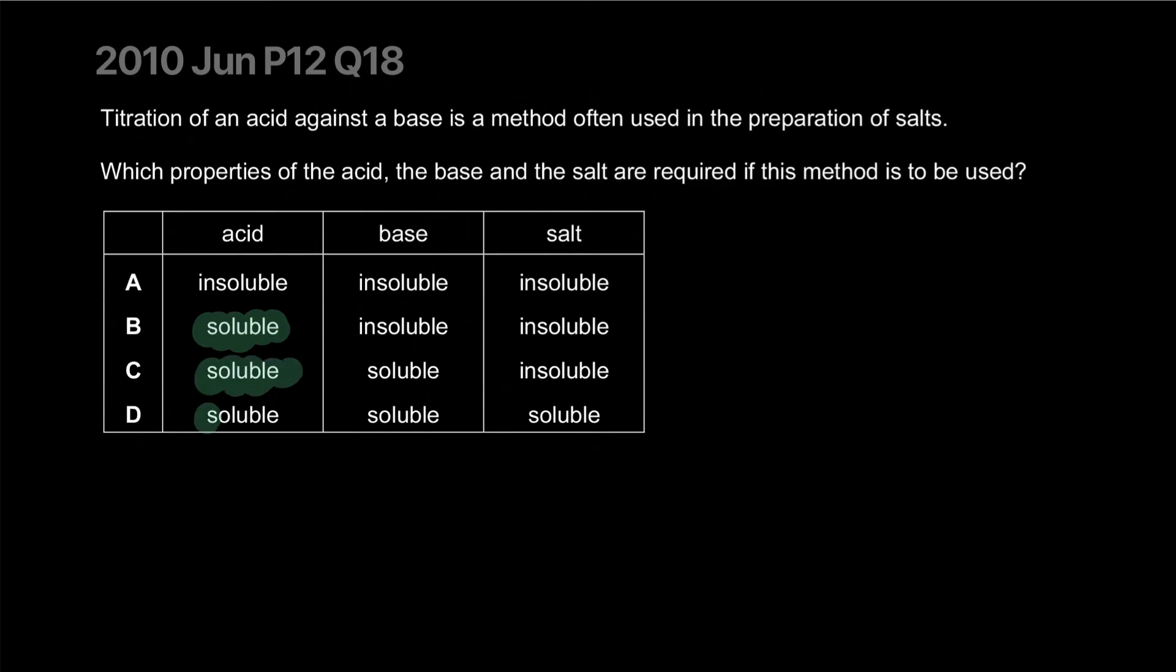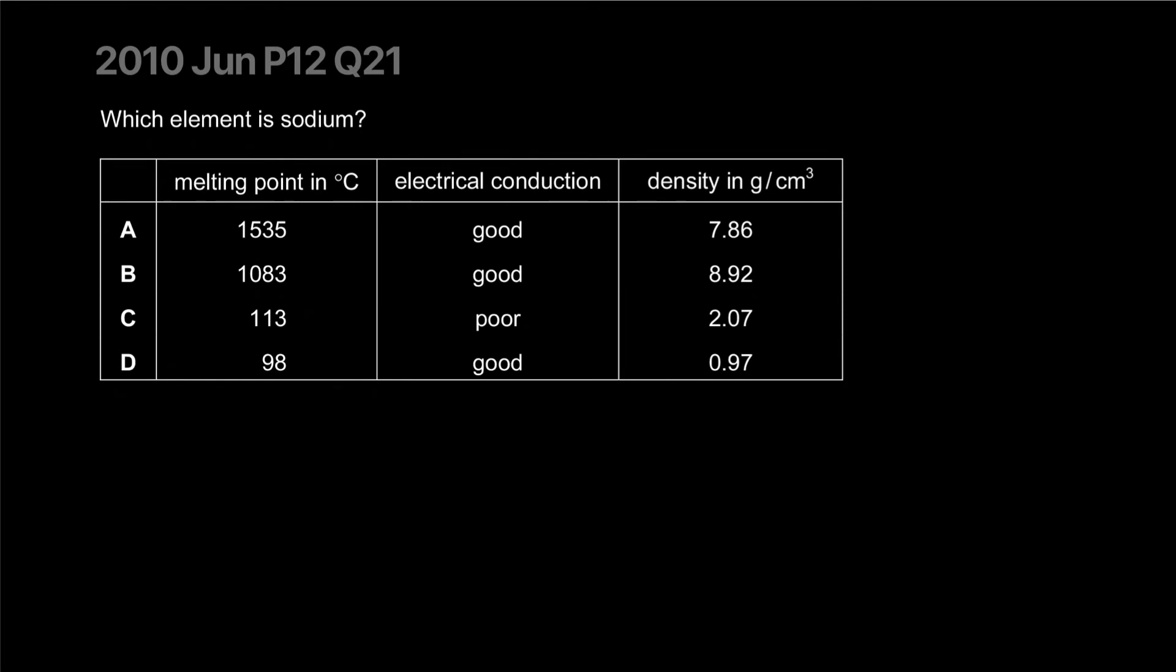Which element is sodium? Sodium is one of those metals you can cut with a knife, so it has a very soft low melting point compared to metals. It's a good conductor, melting point is close to 98, and density is actually less dense than water because it floats on water when you react it. Correct answer is D.